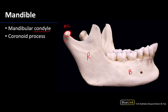More anteriorly facing will be the coronoid process, which is going to be a little bit sharper in terms of its appearance. This is going to be the distal attachment site for the temporalis muscle.